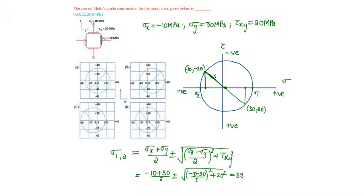as 38.284 for sigma 1 and -18.284 for sigma 2. So in the options, this will be -18.284 and this will be 38.284. Therefore, option B is the correct Mohr circle construction for the given stress system.